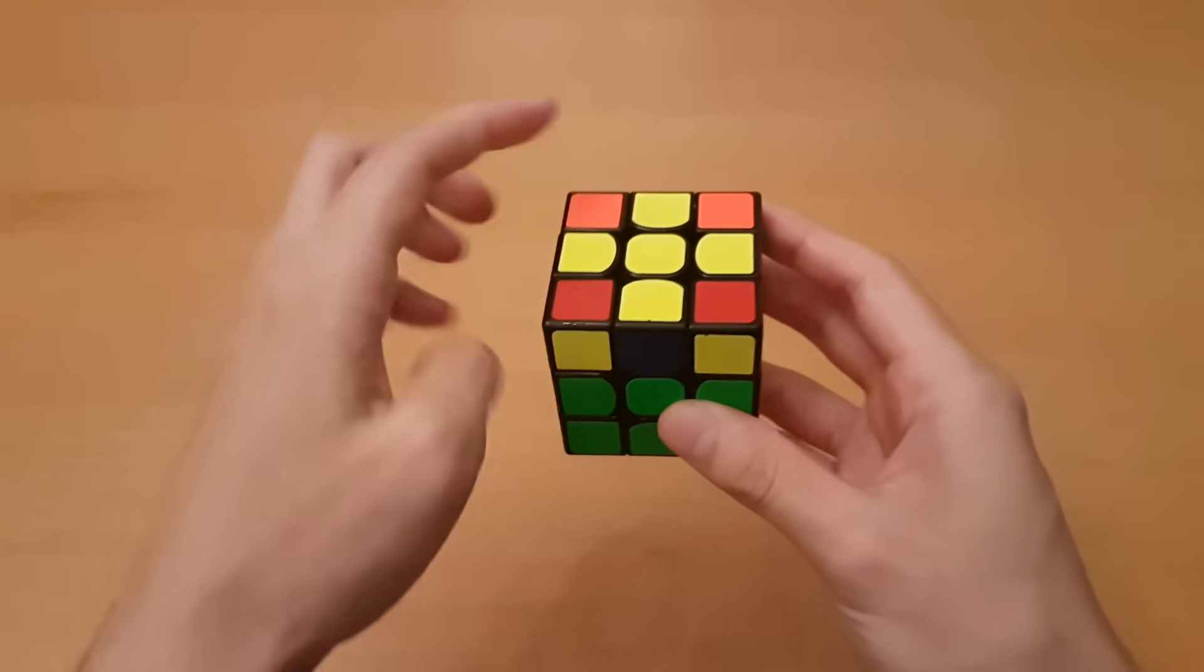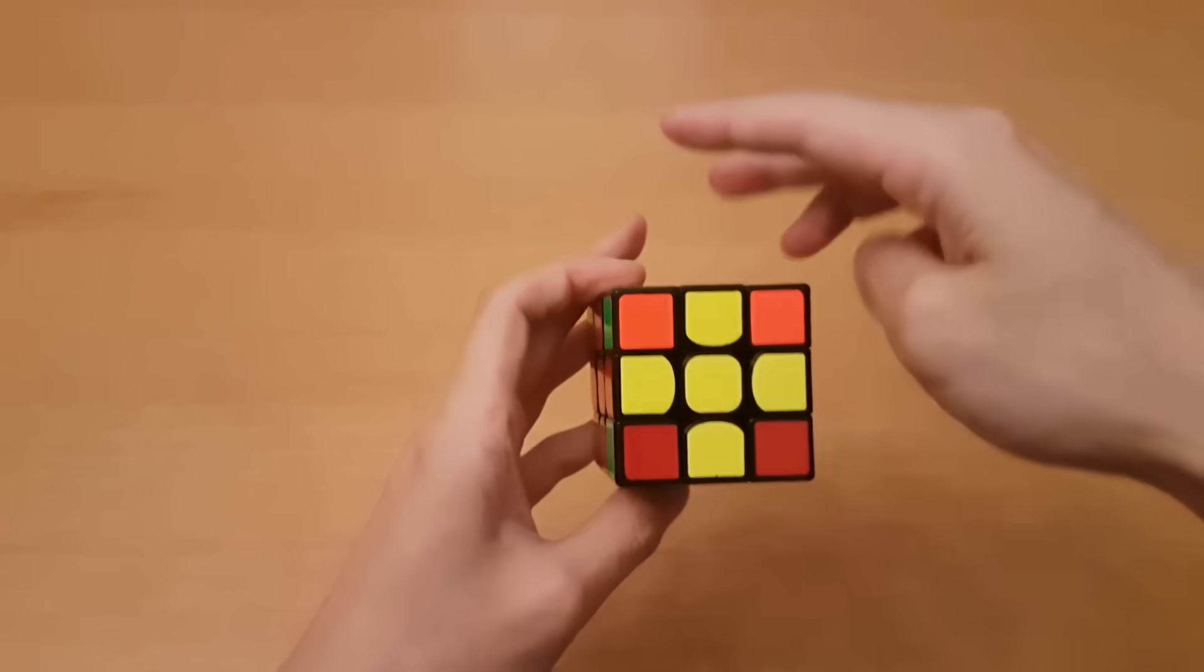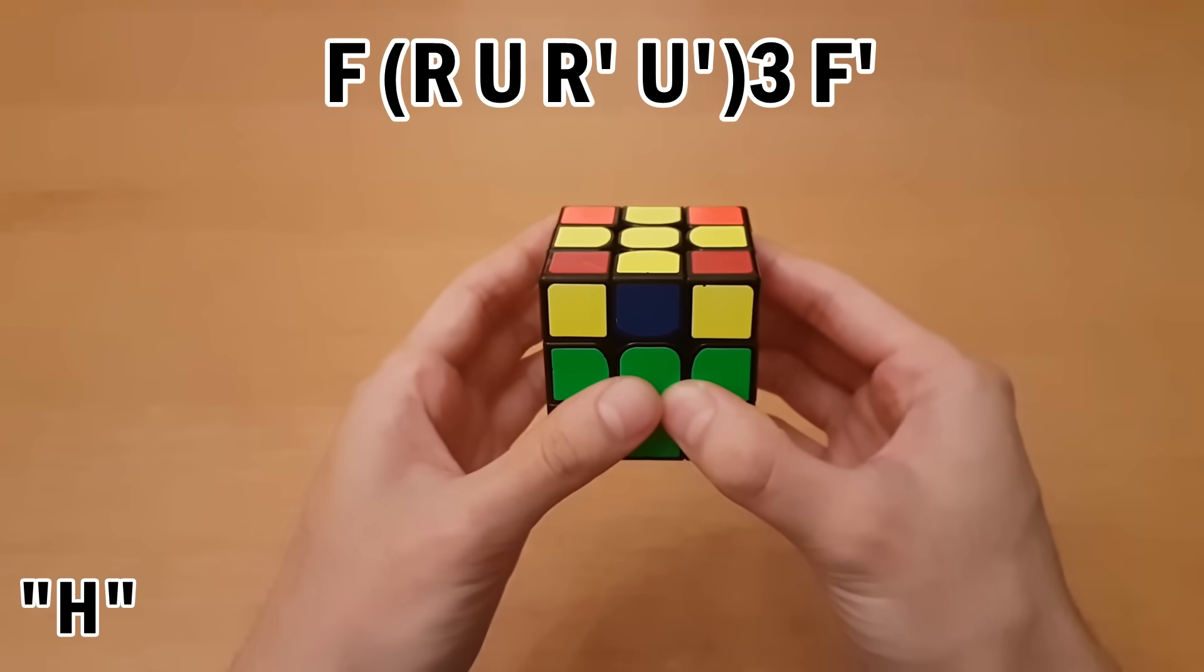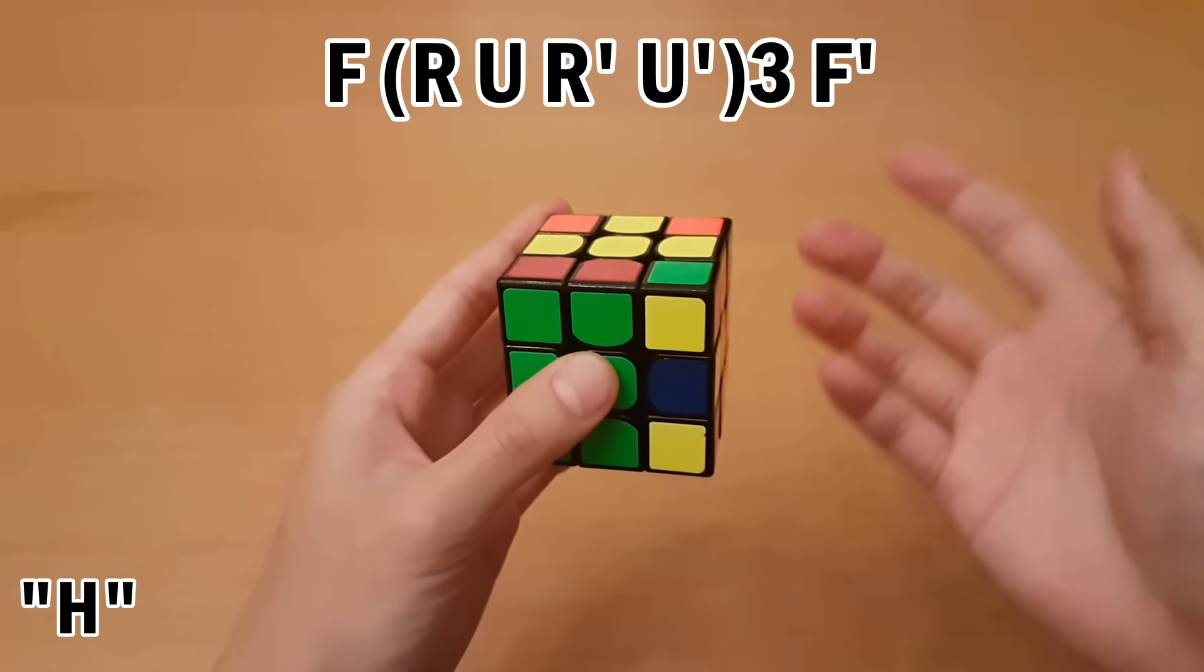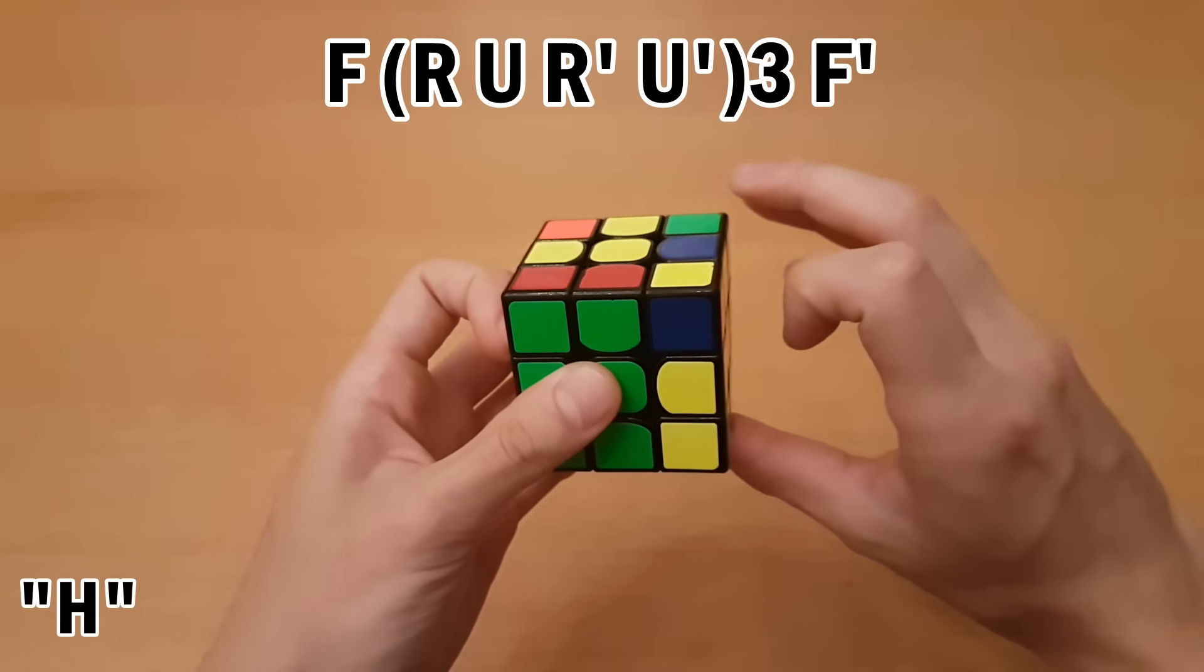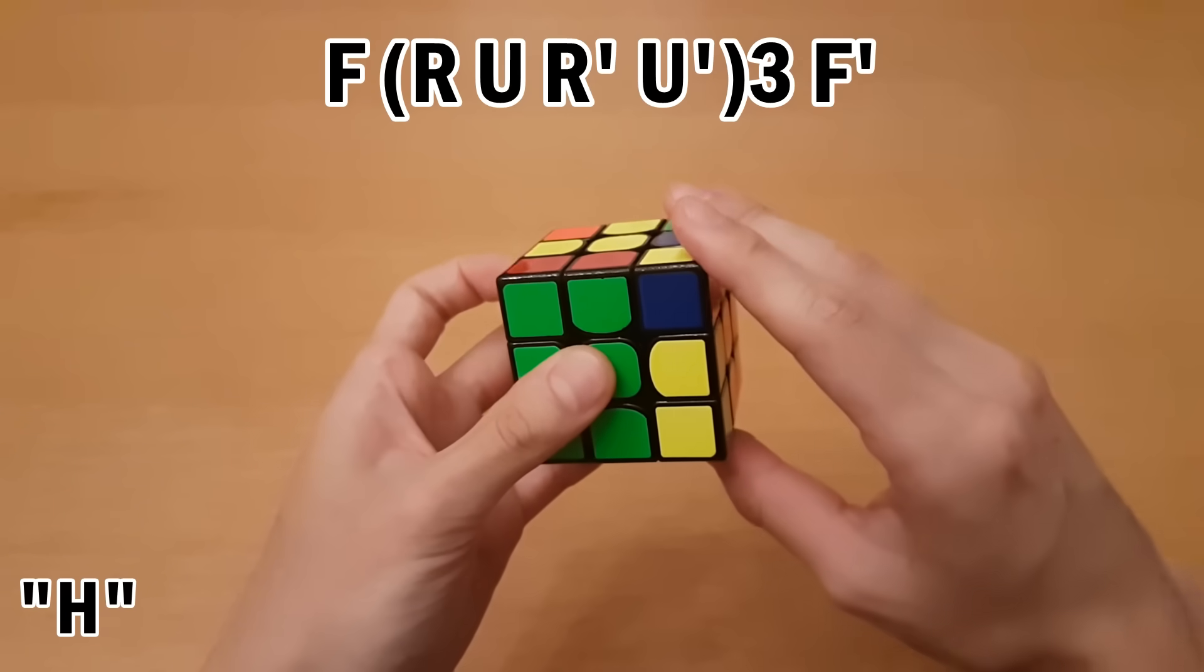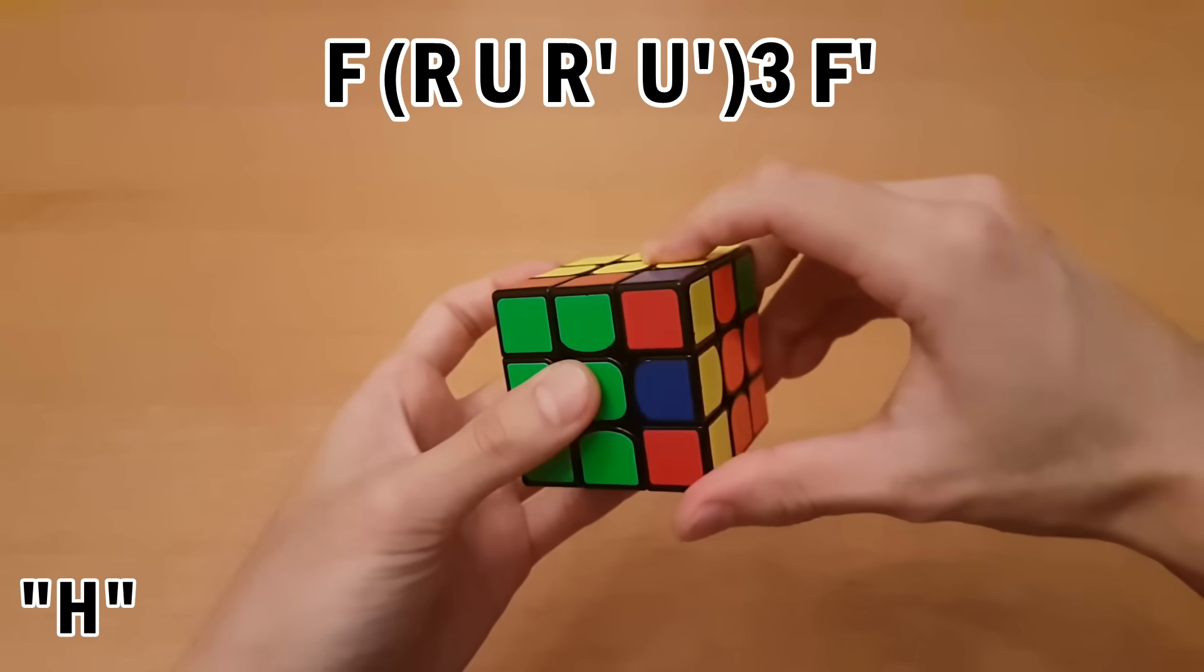Now looking at the cases where there's no corner already done. For the case where these two face one way and the other two face the other way, this algorithm is pretty easy to memorize. You turn the front clockwise, and then it's just like the other ones where you're trying to make a cross. You do R, U, R', U', except you do it three times. That's once, twice, three times, and then undo that front move.